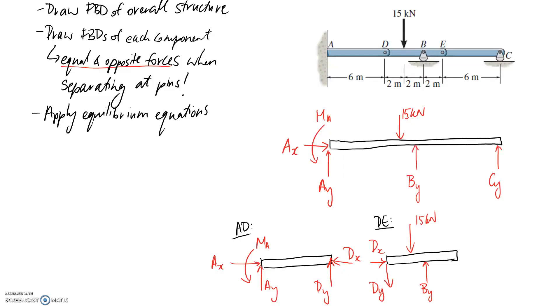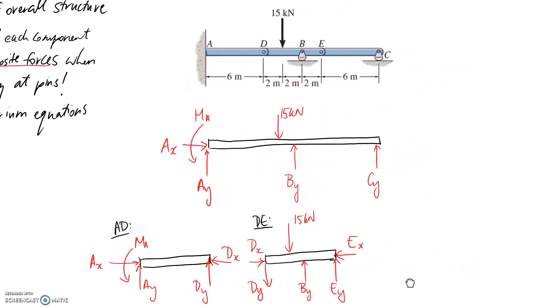So now I need to do basically the same thing on the other end because I have a second pin here at E that I'm going to separate against. So I need to take guesses on the directions. I'm going to guess EX and EY like this. And they're going to need to be corresponded to on the other diagram where E is involved.